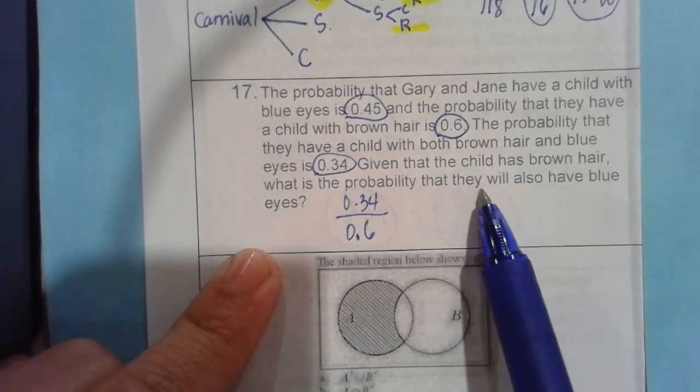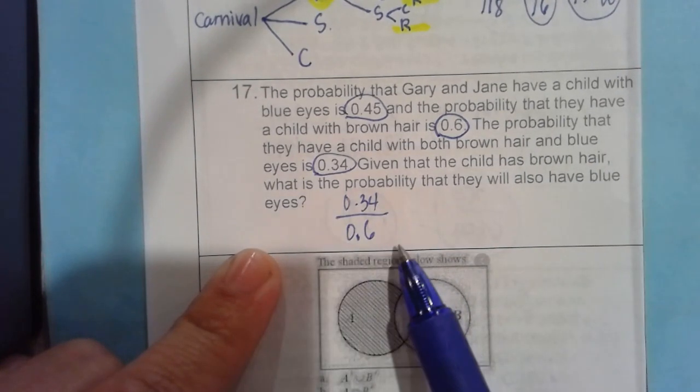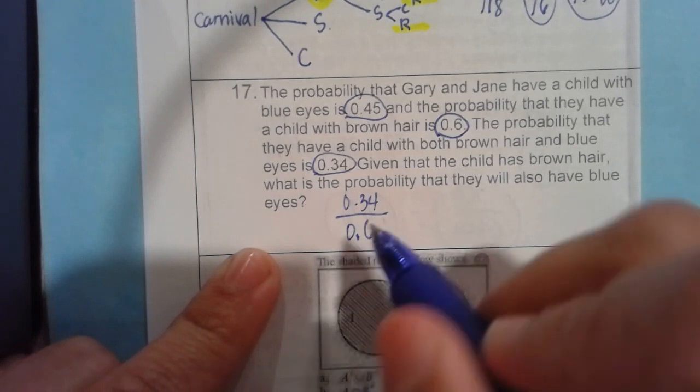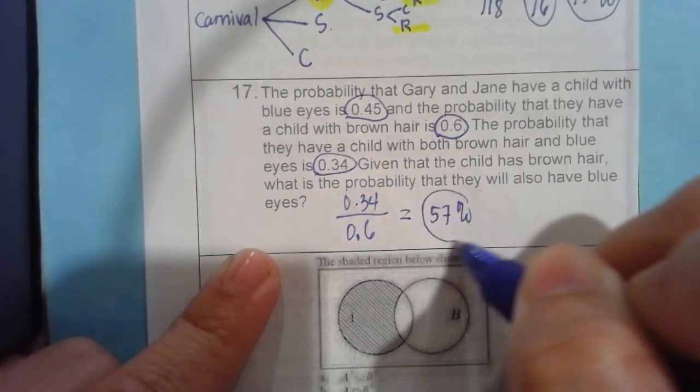Both brown hair, you have a brown hair which is the given, and given that they have blue eyes. So that's 0.34. So the answer is 57 plus 9.